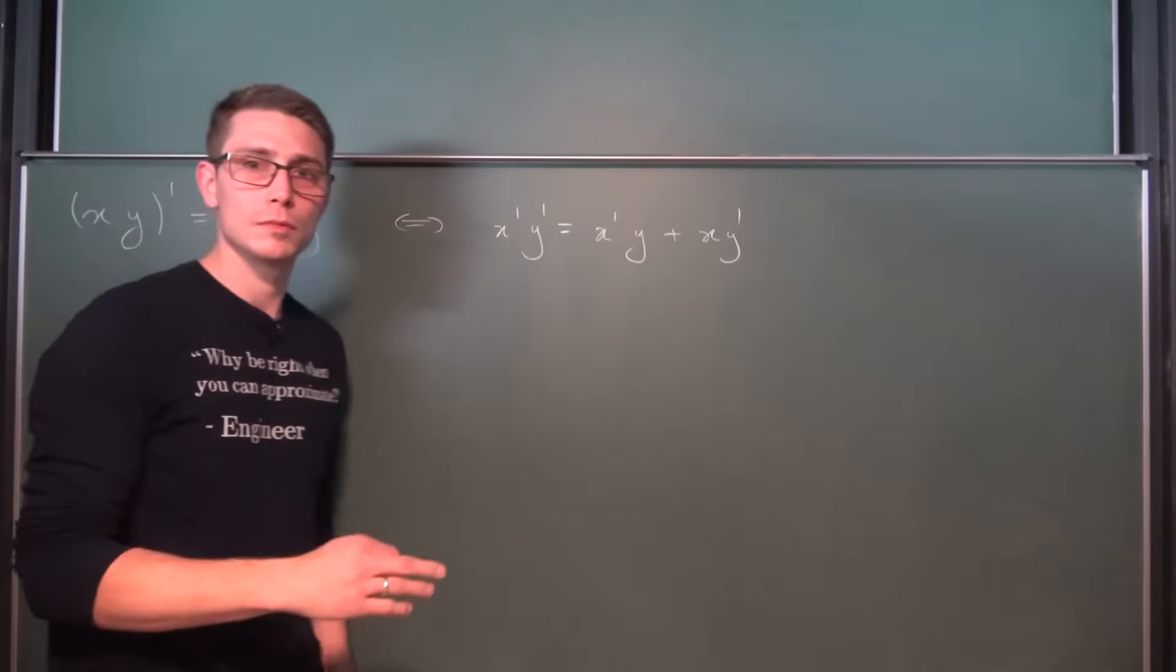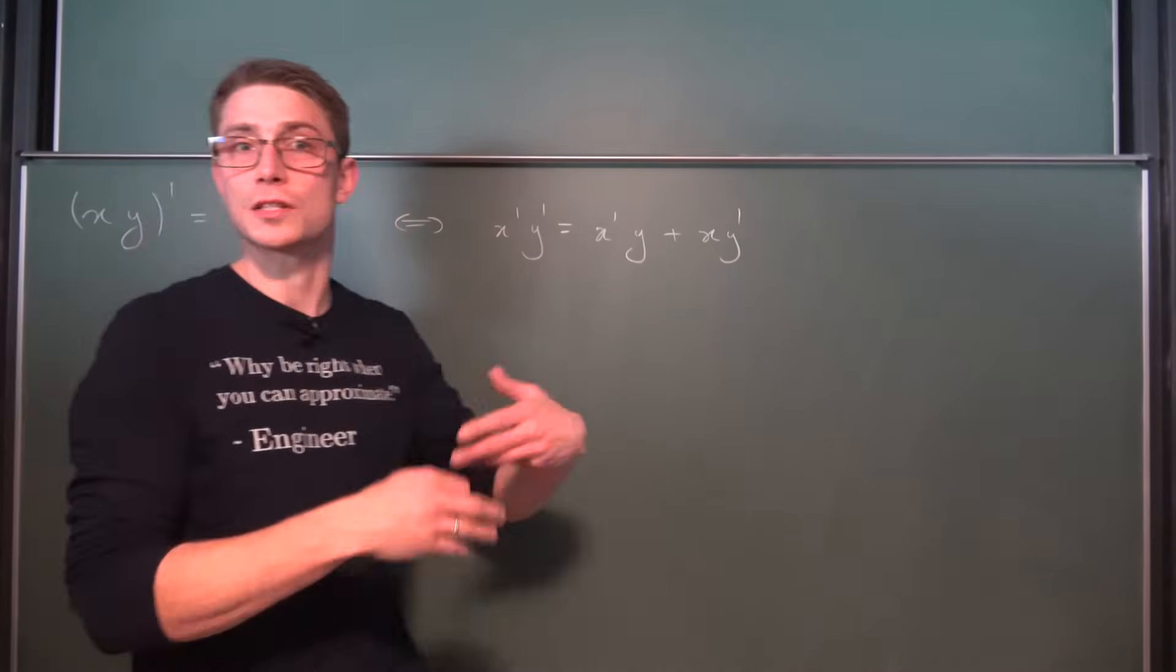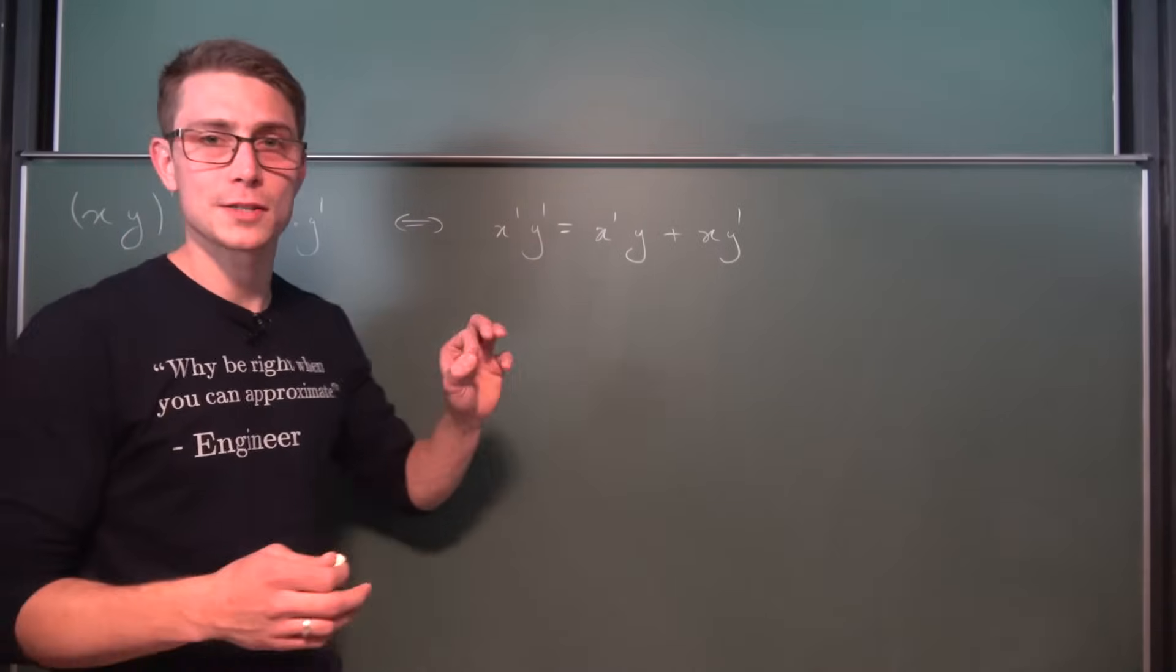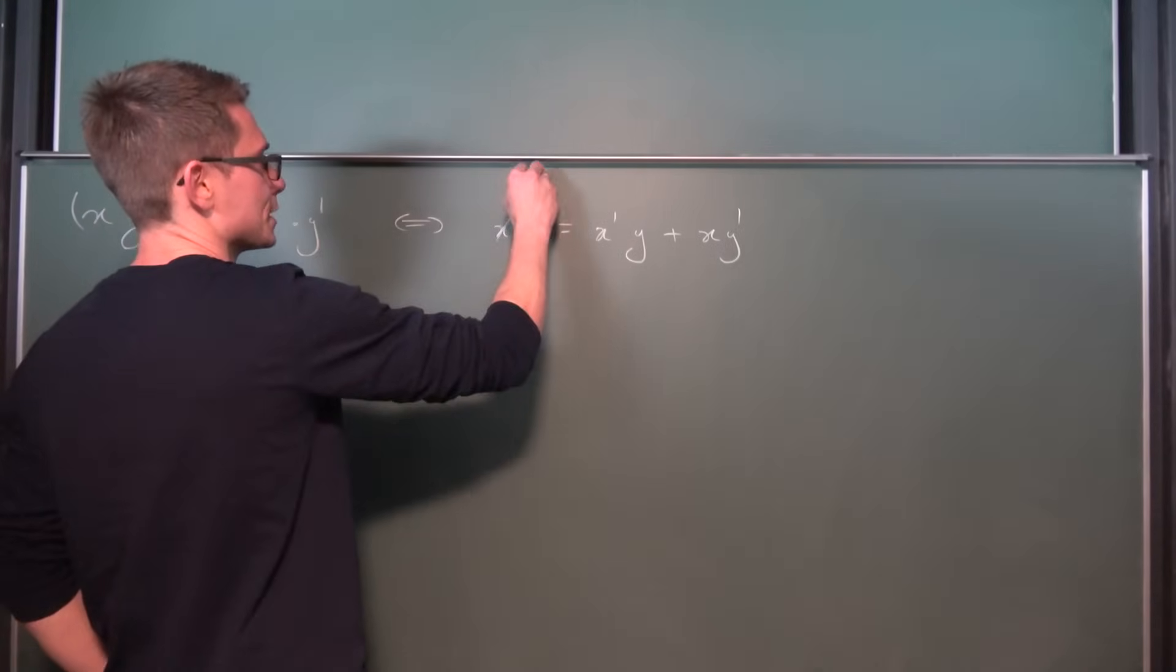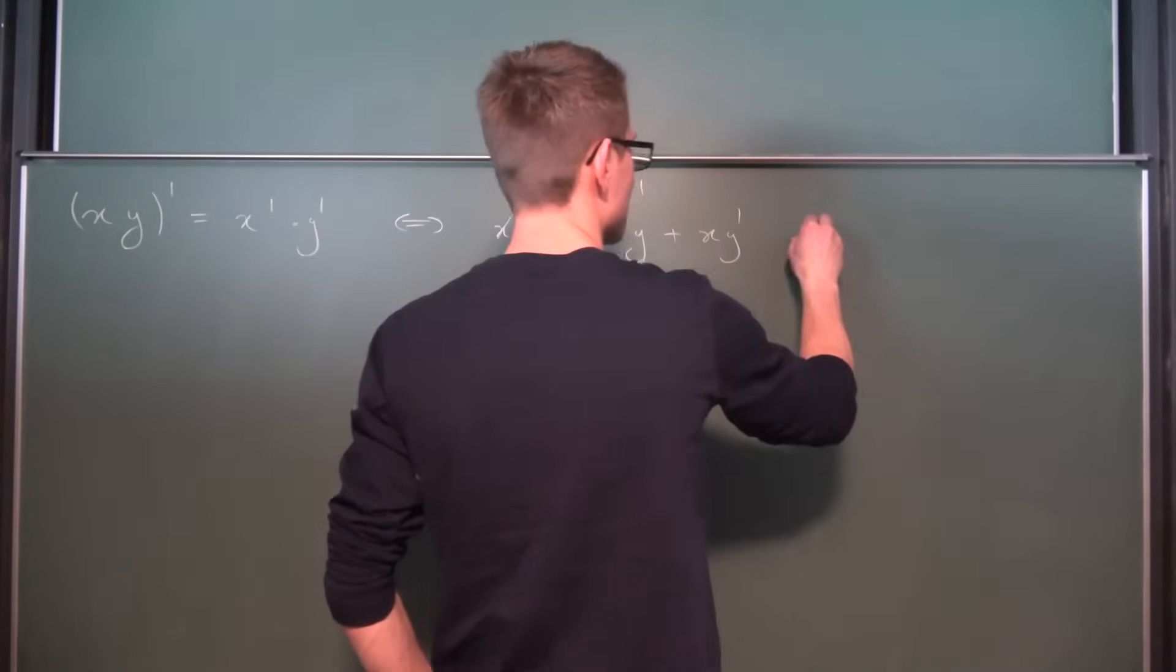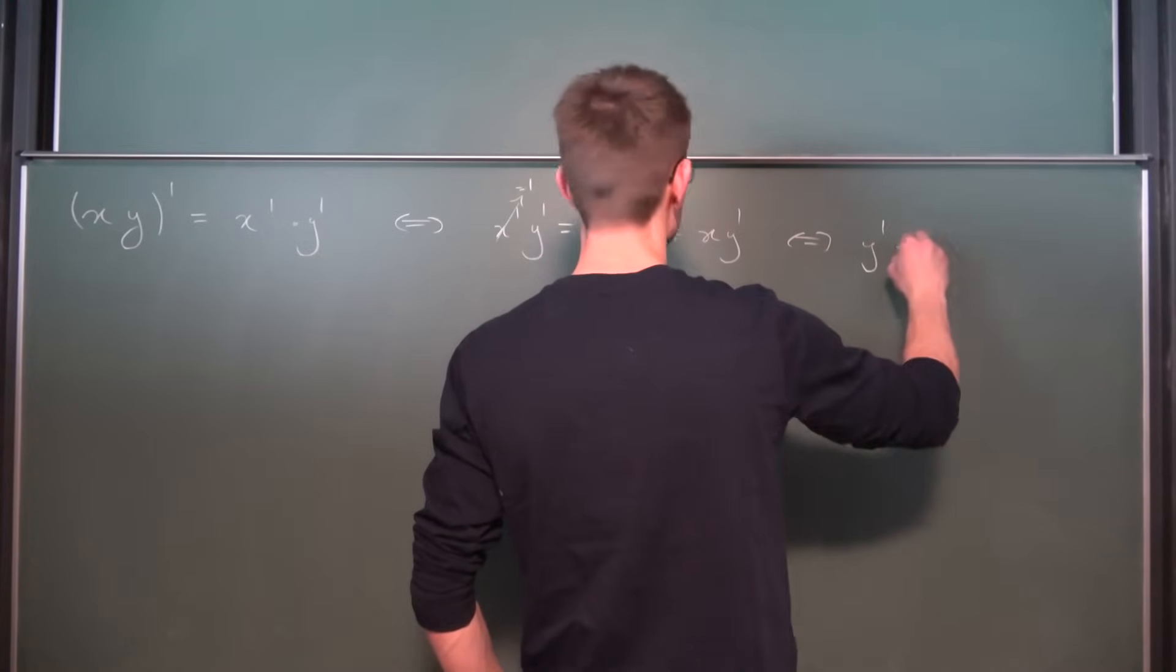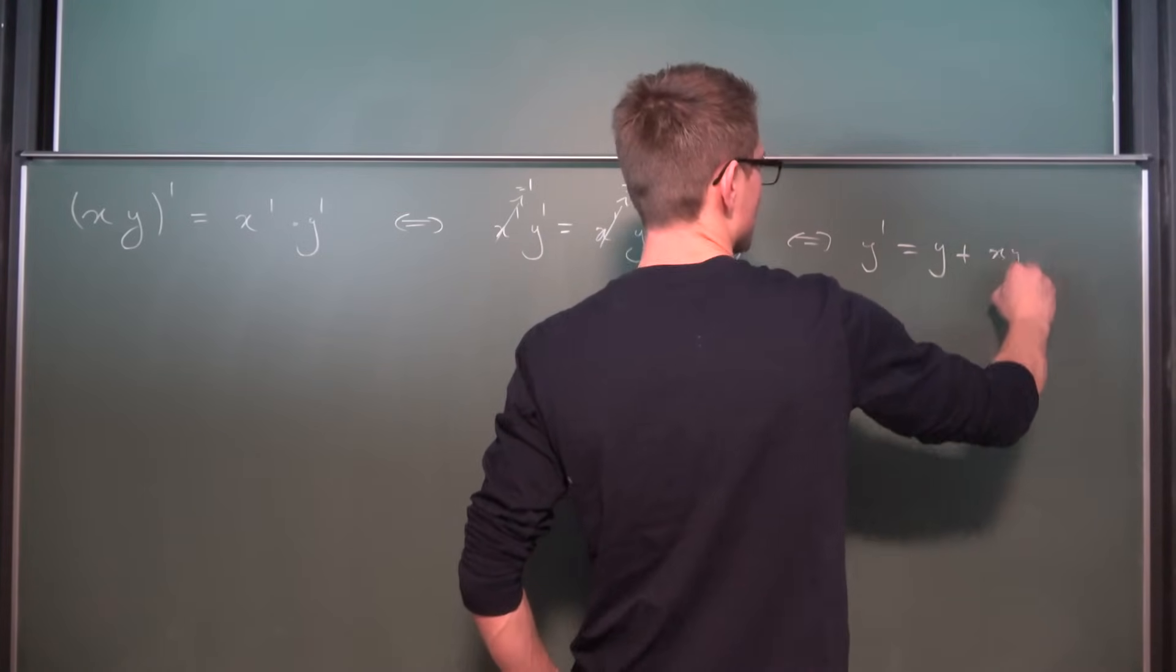And now since y is a function with respect to x and x is hence just a variable which y depends on, if we were to differentiate x, obviously this just turns into 1. So this right here is 1, that right here is 1, giving us a simplified expression of y prime is equal to y plus x times y prime.